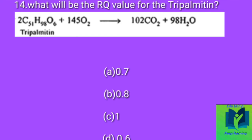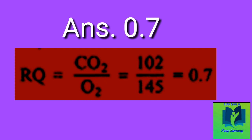What will be the RQ value for tripalmitin? Option A: 0.7. Option B: 0.8. Option C: 1. Option D: 0.6. Answer: 0.7.